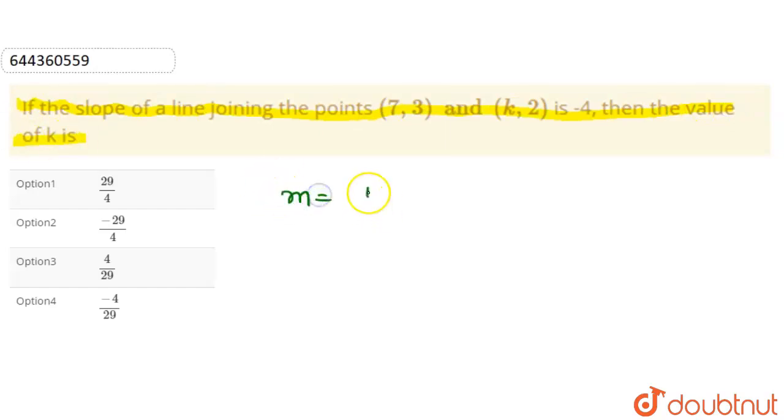We know that slope m equals (y₂ - y₁)/(x₂ - x₁), where (x₁, y₁) and (x₂, y₂) are the points through which the line is passing. In this question, we have the two points (7, 3) and (k, 2), and we're given the slope.